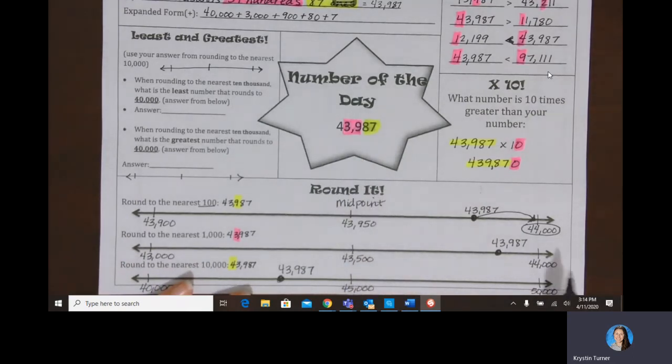And now I'm going to compare 43,500, my midpoint, to 43,987. Well, that's going to be really close to 44,000, and it's much bigger than 43,500. So I'm even closer to 44,000 over here, and I'm going to round up again to 44,000.